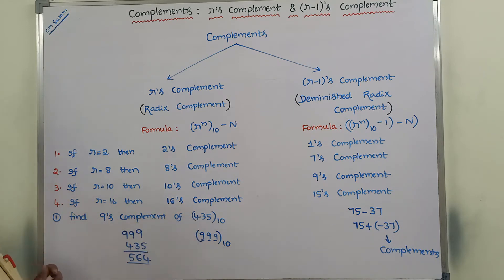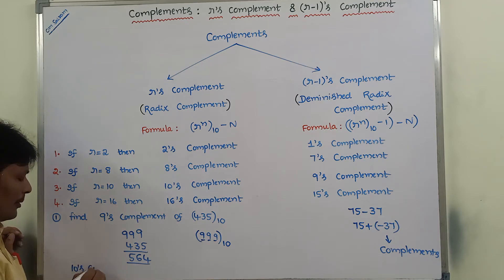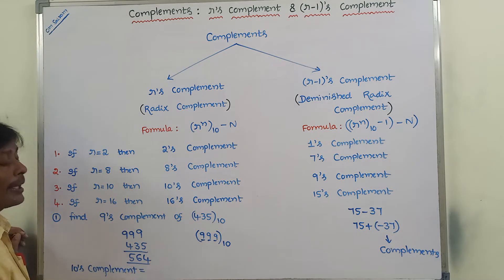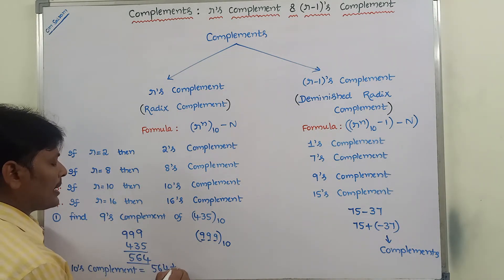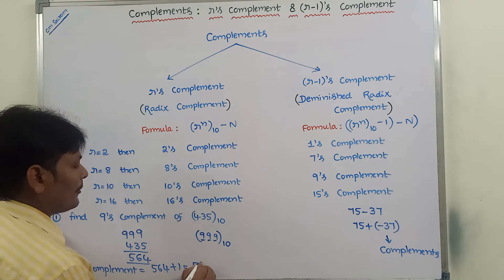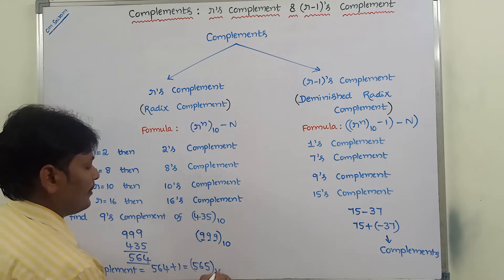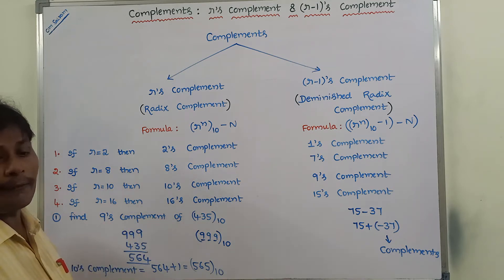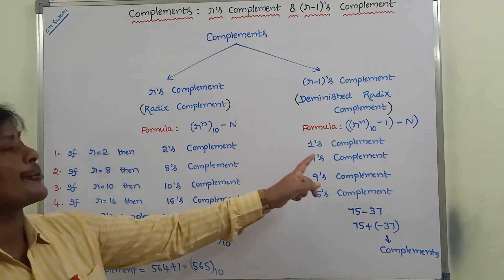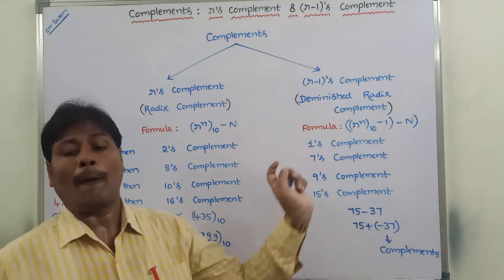Now, what is the 10's complement of 435 with base 10? We know that 10's complement is equal to 9's complement plus 1. What is the 9's complement? That is 564 plus 1, that is equal to 565 base 10. This is the simple shortcut procedure for finding out the 9's complement and 10's complement of the given number.